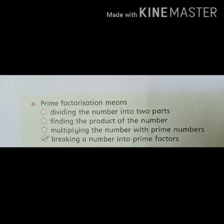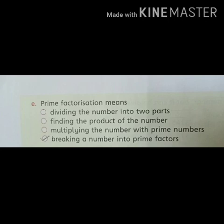Now students, this part on page number 34: the options are — 2nd: finding the product of the number; 3rd: multiplying the number with prime numbers; 4th: breaking a number into prime factors. The correct option is the 4th one — breaking a number into prime factors — because prime factorization means breaking a number into its prime factors.